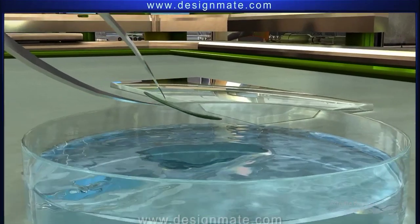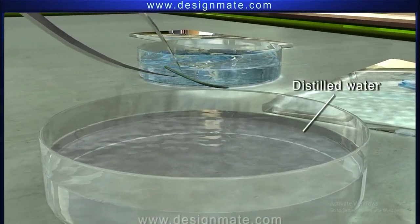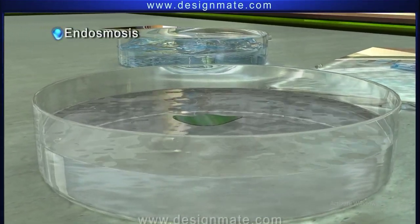When such a peel of rhoeo cells is placed in distilled water, then it results in endosmosis.